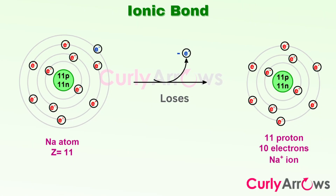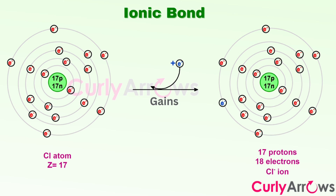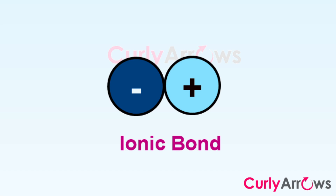Ions are formed when an atom gives away or takes electrons, an activity that shifts the delicate balance between the protons in the nucleus and outer electrons. When two oppositely charged ions attract, they form what is known as an ionic bond. Since charge-containing ions are involved in bonding, ionic bonds are strong bonds.